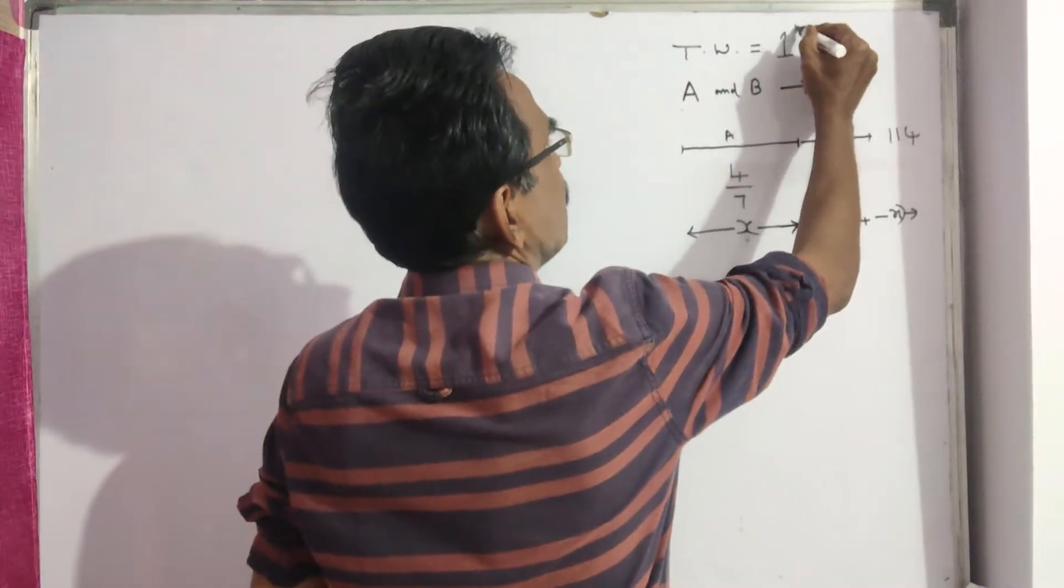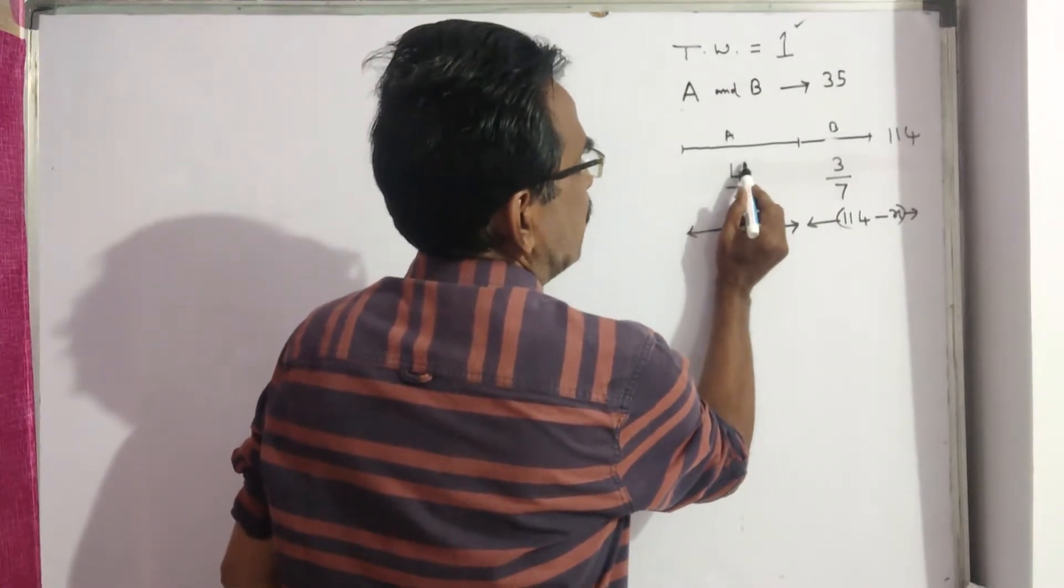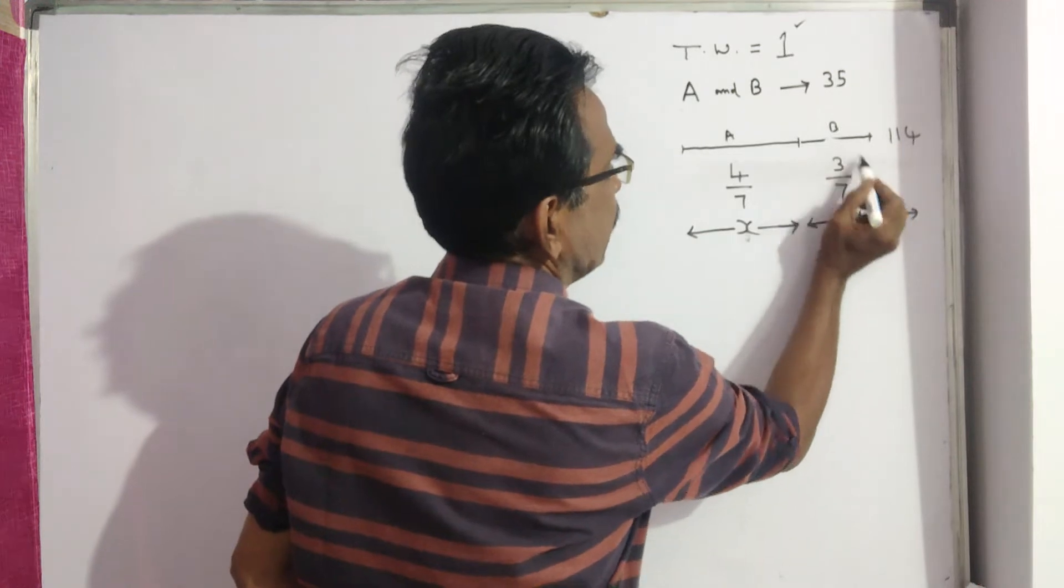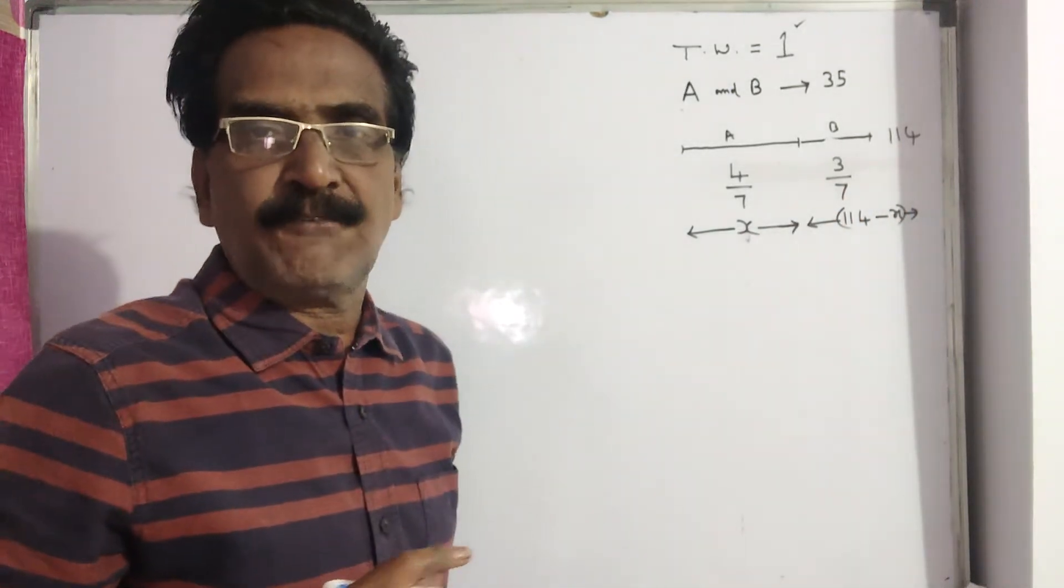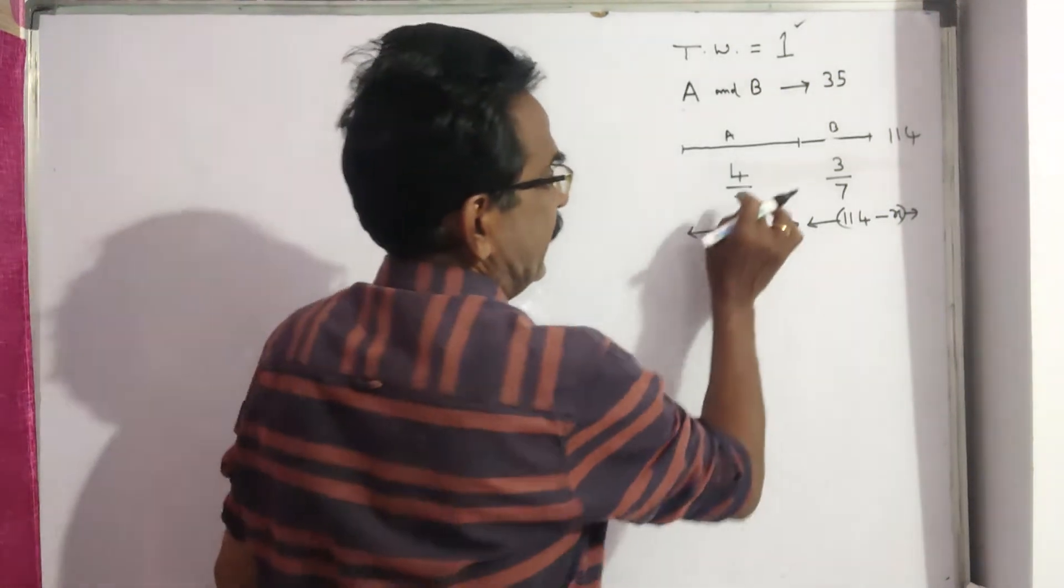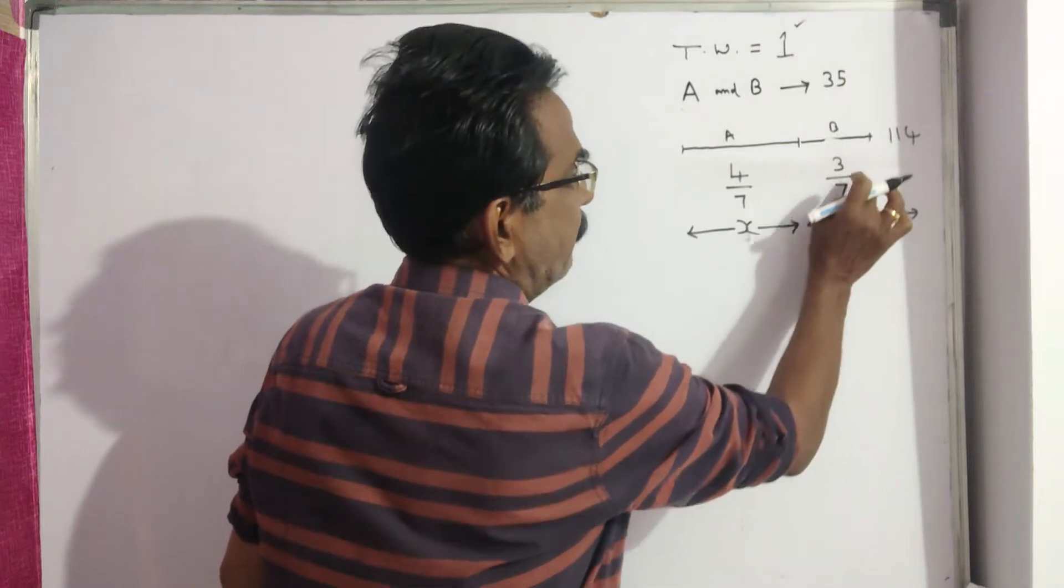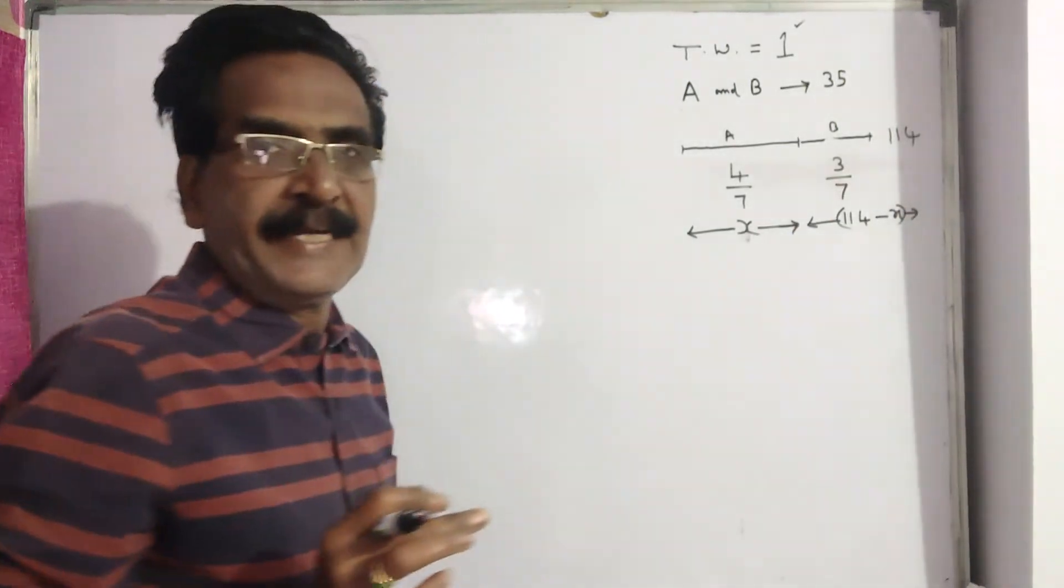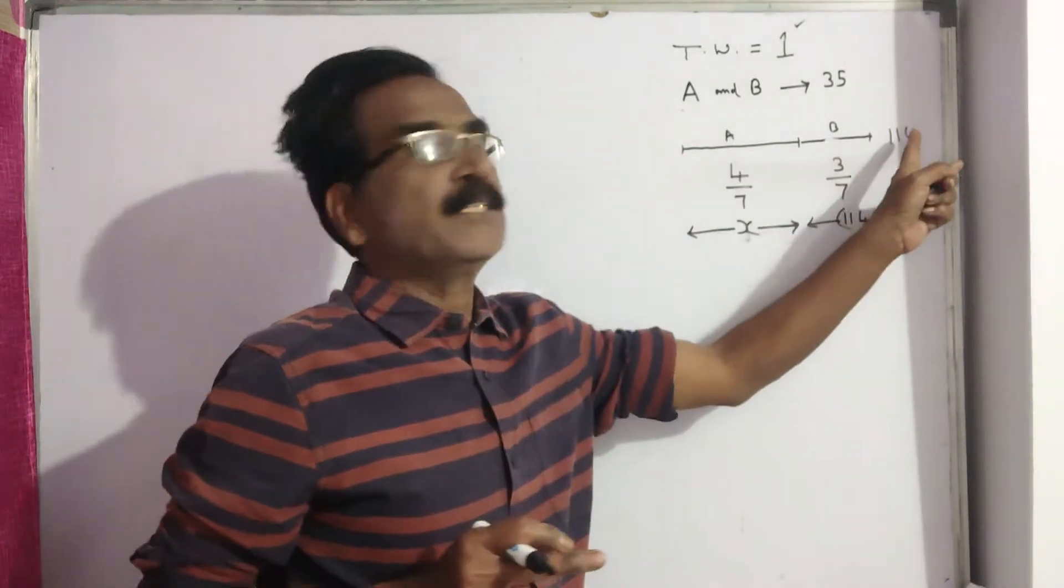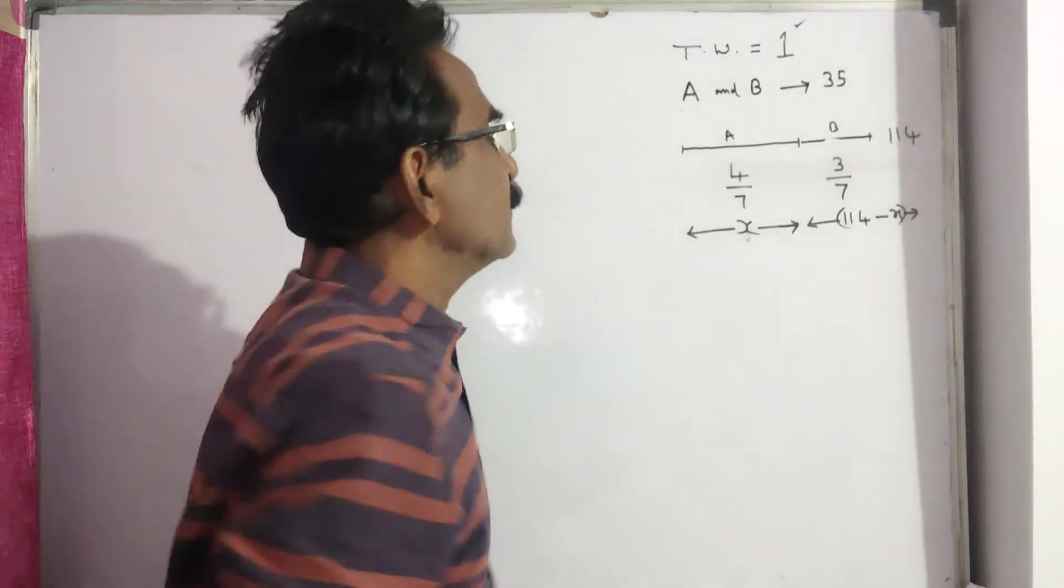Friends, let us say the total work is equal to 1. See, A completes 4 by 7. That means B completes the remaining 3 by 7. 1 minus 4 by 7, 3 by 7. Let us say A completes this 4 by 7 work in x days. Then B completes the remaining 3 by 7 work in 114 minus x days because the total number of days given in the problem is 114 days.